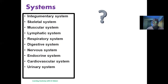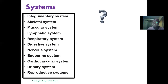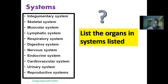The cardiovascular system is responsible for the transportation of blood to and from different organs in the body. We have the urinary system, which involves the production of urine and also its elimination to the external environment. Then we have the reproductive system, involved in the production of offspring. As a task, list the different organs in the systems that have been listed.